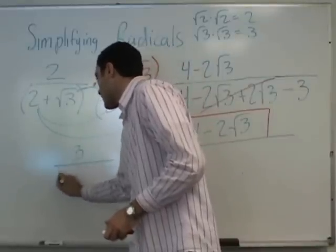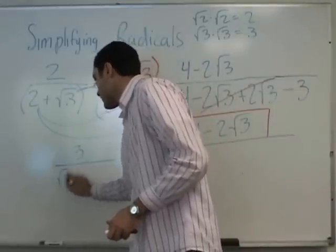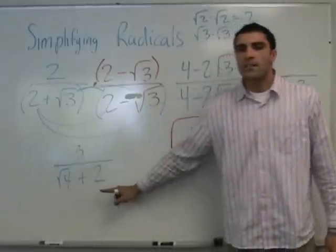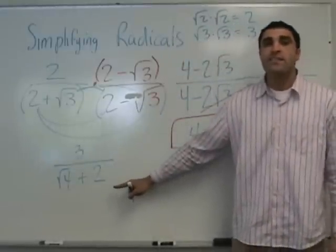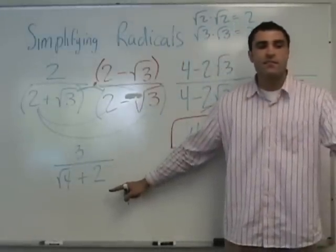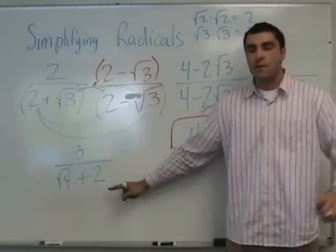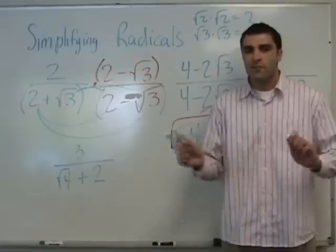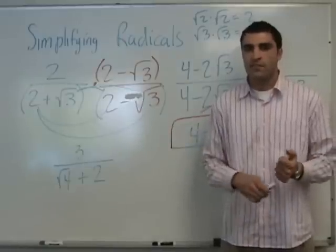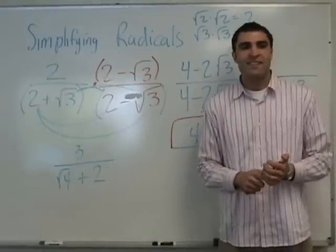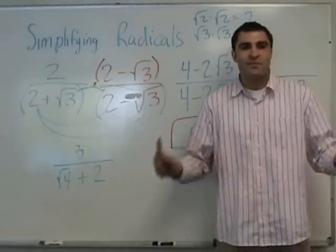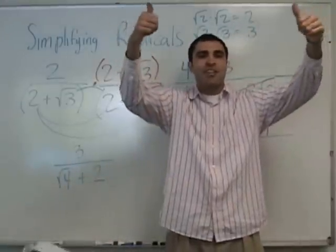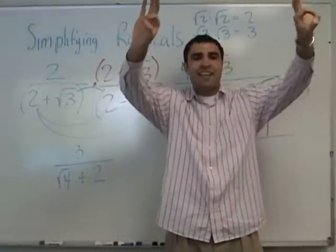If you had square root of 4 plus 2, what would you multiply top and bottom by? Square root of 4 minus 2. Then you'd foil and distribute. Alright, thank you class — that was an adventure with the battery. Bye, world! Stay in school.